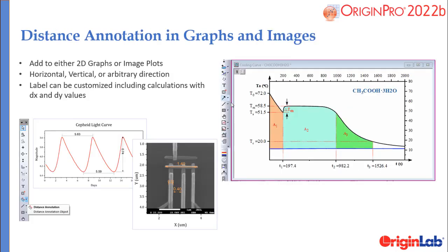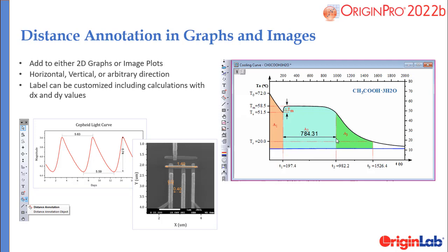A new distance annotation tool has been added. It works on 2D graphs and image plots. Add horizontal, vertical, or angled annotations. Labels can be customized using calculations involving DX and DY.